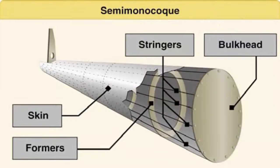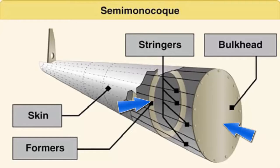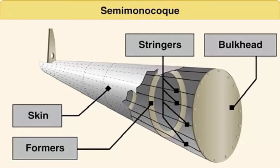Semi-monocoque construction uses a substructure to which the airplane's skin is attached. The substructure, which consists of bulkheads or formers of various sizes and stringers, reinforces the skin by supporting some of the bending stress from the fuselage.